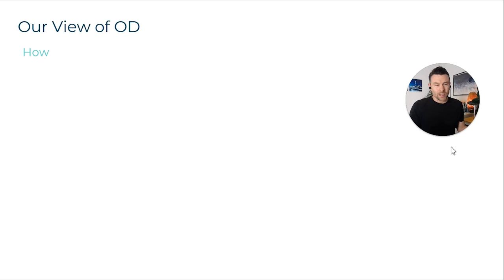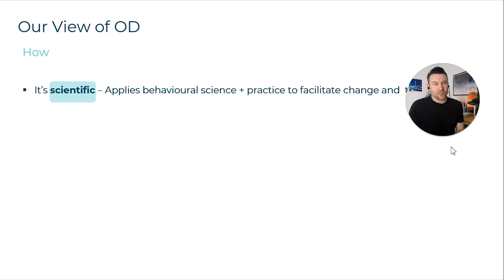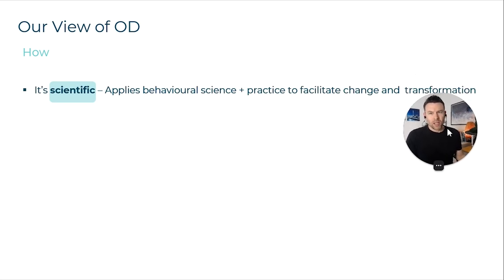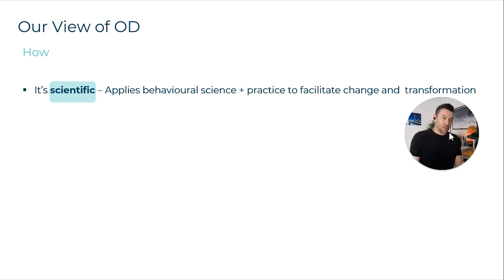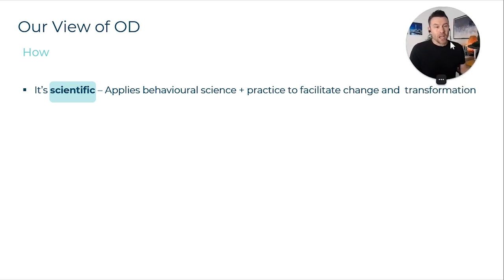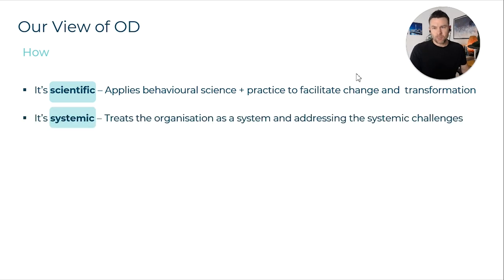So how do you do OD well, and what is the approach? It's best to describe OD as applying behavioural science in its work. We take lots of proven methodologies for working with organisations and apply them through change and transformation. We also take evidence from within the organisation — an evidence-based approach. We measure, we diagnose, and then we create change based on that.